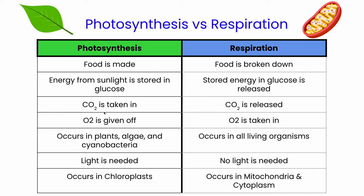In photosynthesis, carbon dioxide is taken in, whereas in respiration, CO2 is released. In photosynthesis, oxygen is given off, whereas oxygen is taken in during respiration. Photosynthesis occurs in plants, algae, as well as certain types of bacteria, whereas respiration happens in all living organisms.